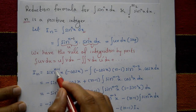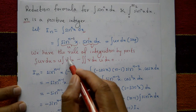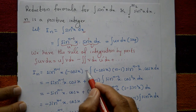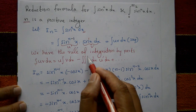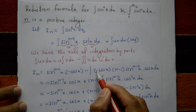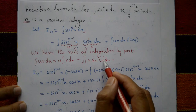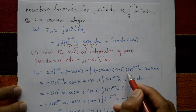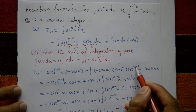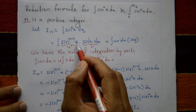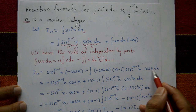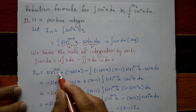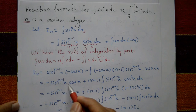Applying integration by parts: Iₙ = sinⁿ⁻¹x · (−cosx) minus the integral of (−cosx) multiplied by the derivative of sinⁿ⁻¹x. Differentiating sinⁿ⁻¹x gives (n−1)·sinⁿ⁻²x · cosx. So the expression becomes −sinⁿ⁻¹x · cosx plus (n−1) times the integral of sinⁿ⁻²x · cos²x dx.